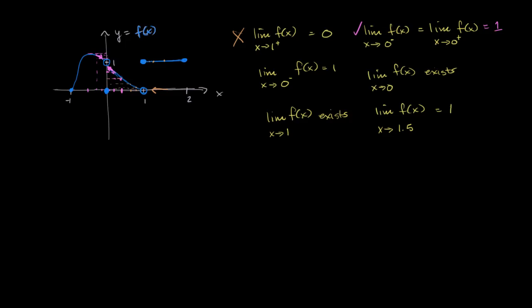The limit of f of x as x approaches 0 from the negative direction is equal to 1 — we've already established that, and it's true. Likewise, the limit of f of x as x approaches 0 exists: we've shown it equals 1, so that is also true.